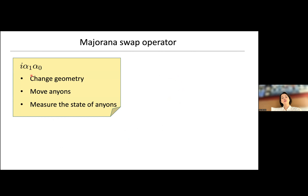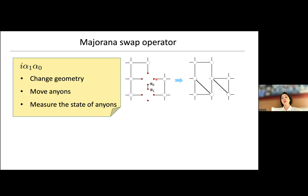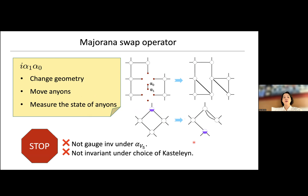We've created Ising anyon pairs and now have to figure out how to move them. Taking two Majoranas, multiplying by i, gives a Hermitian operator. Choosing α_1 and α_0 and envisioning a unitary transformation that swaps the two, that transformation gives changes in the geometry of the graph. It can move the anyons and also measure their state. The remaining job is to make this gauge invariant and independent of the choice of orientation.